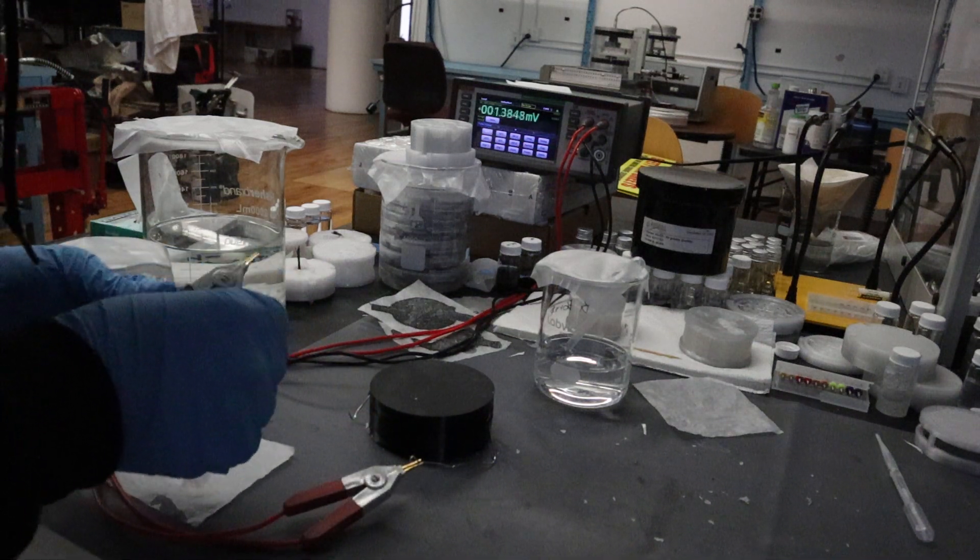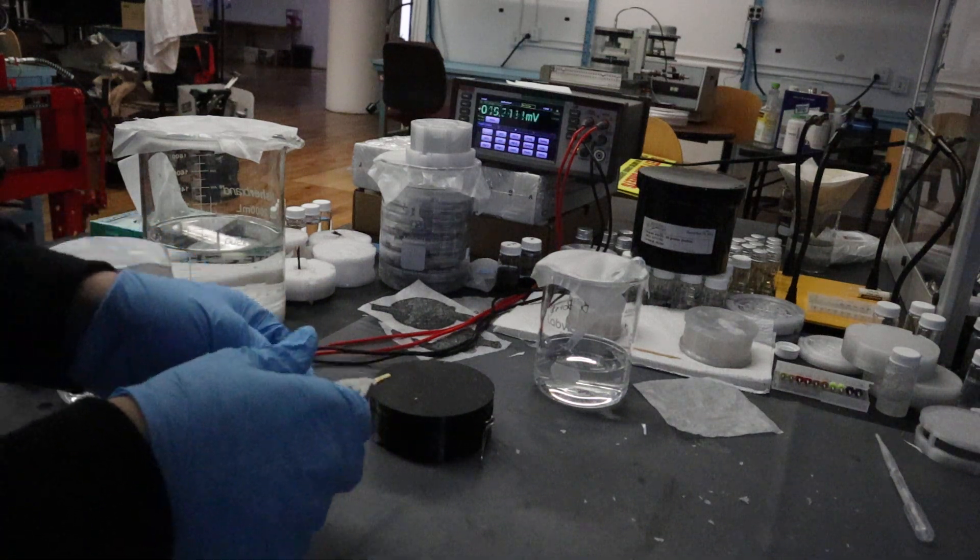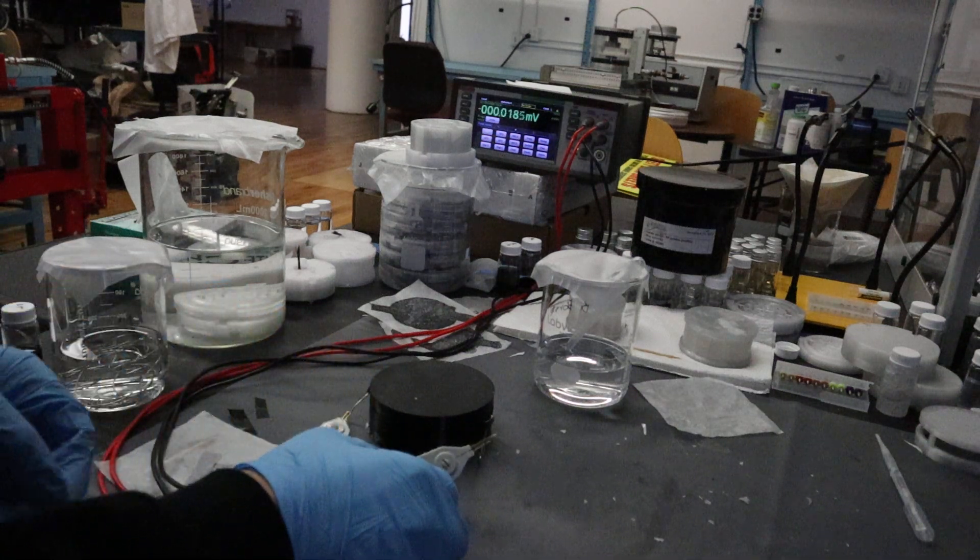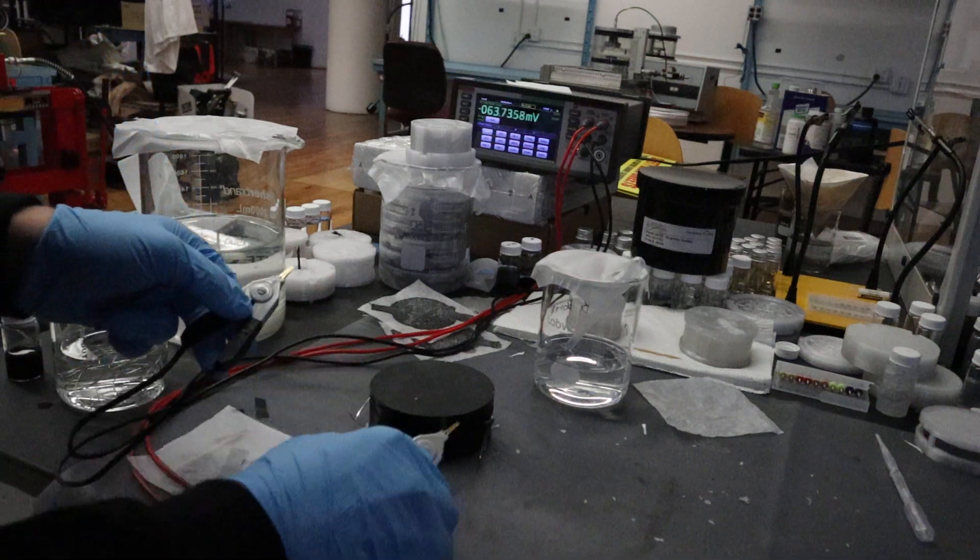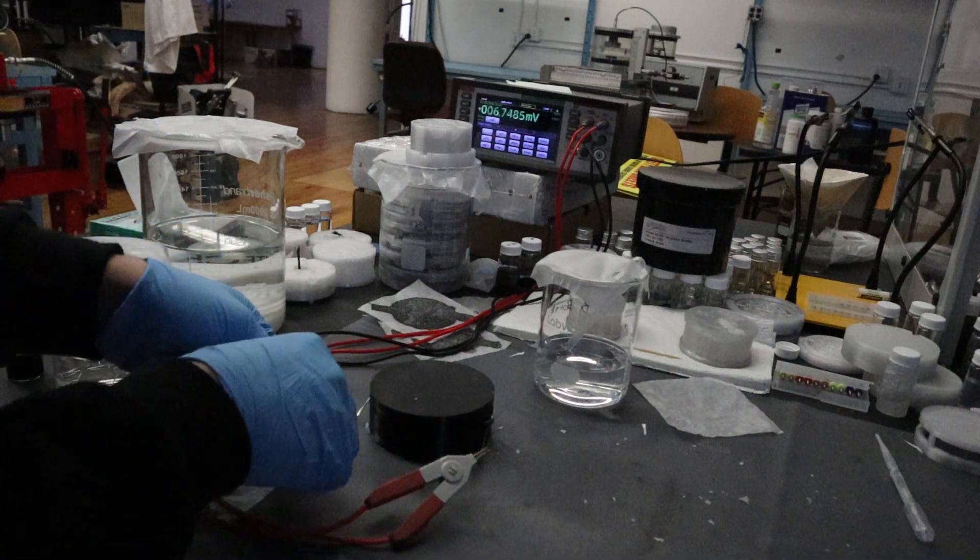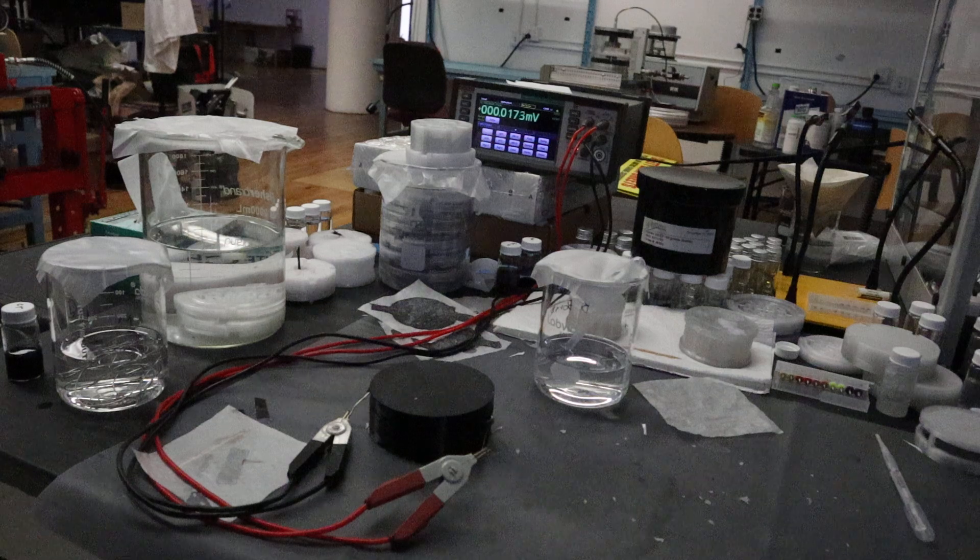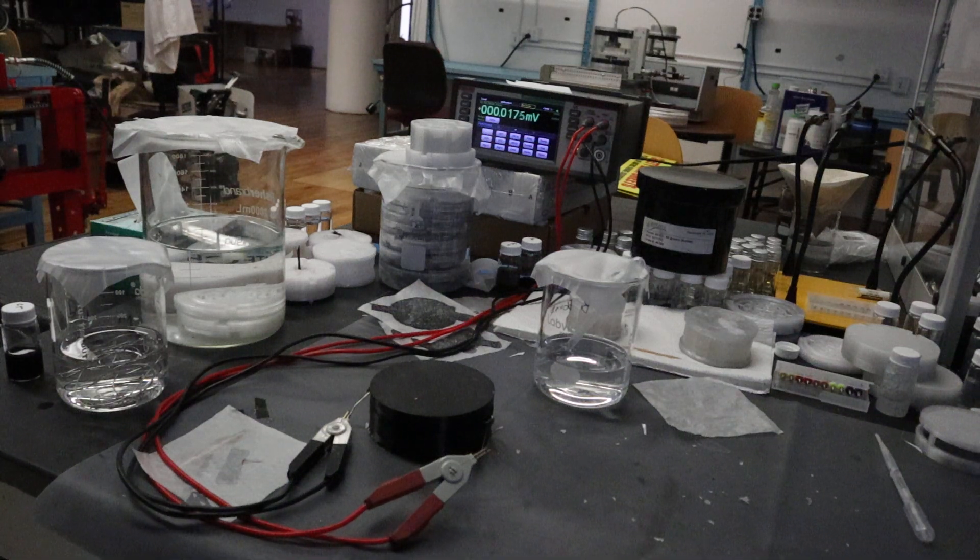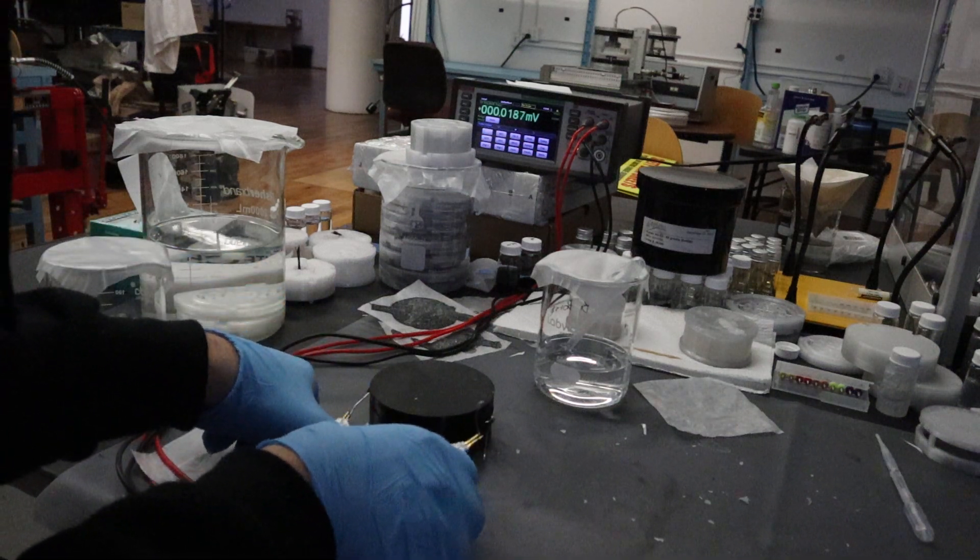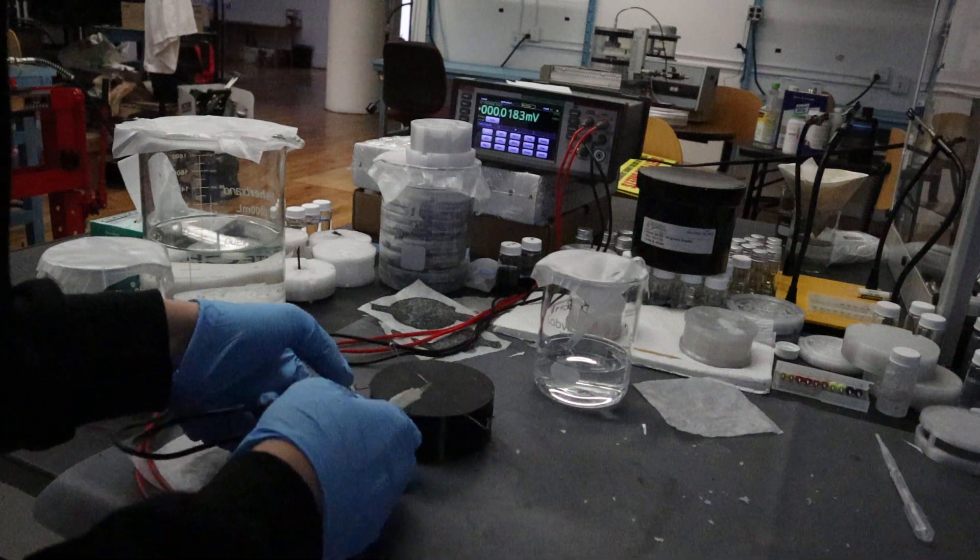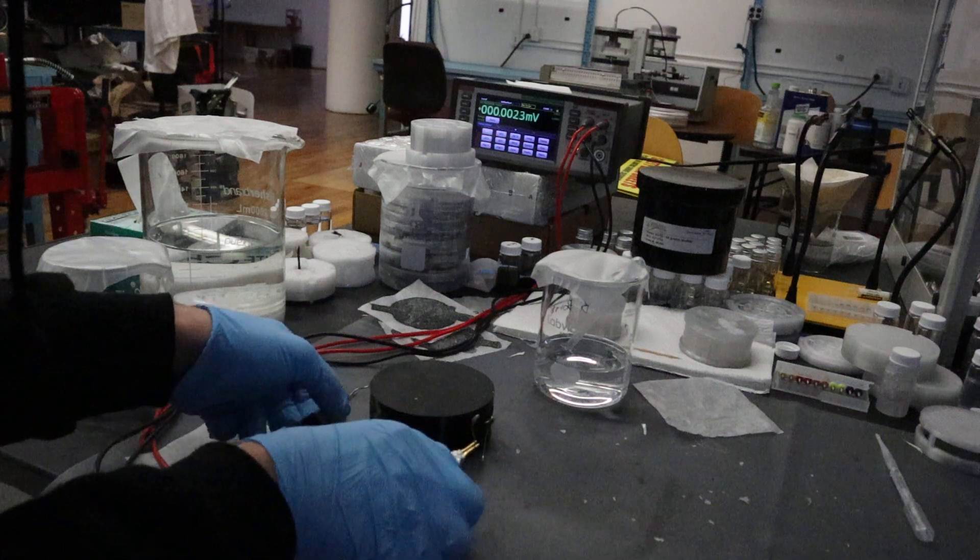And everything's dry here now, so it will have equilibrated with the external environment. So now if we switch that around, negative 0.018 millivolt, negative 0.017. So the bias on the Keithley is about 10x lower than the voltage bias on this.